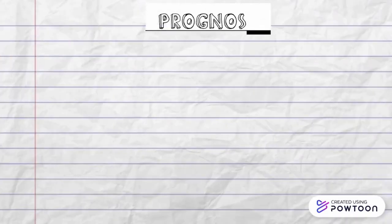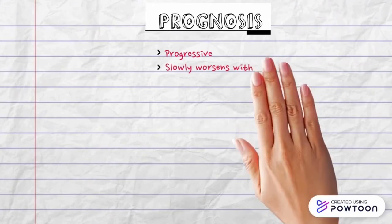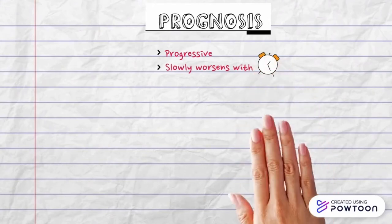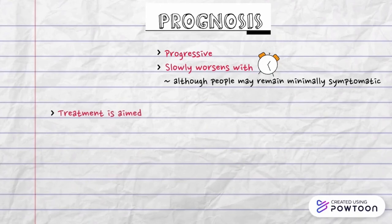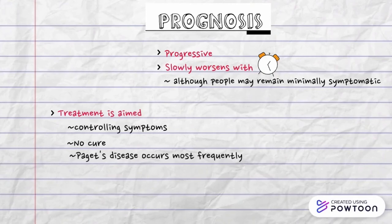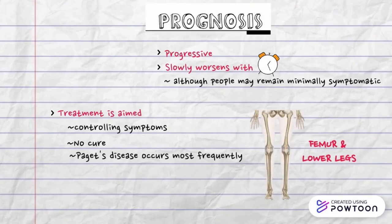The disease is progressive and slowly worsens with time. Although people may remain minimally symptomatic, treatment is aimed at controlling symptoms as there is no cure. It occurs most frequently in the spine, skull, pelvis, femur, and lower legs.